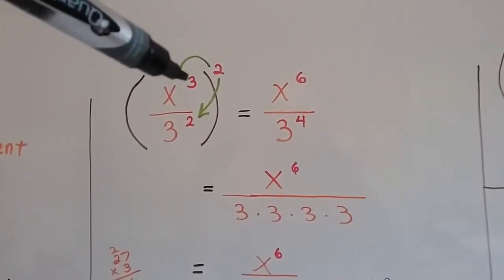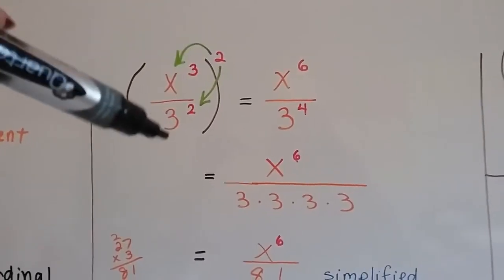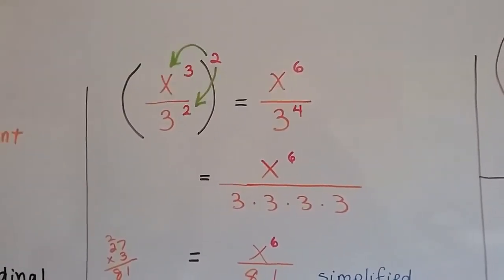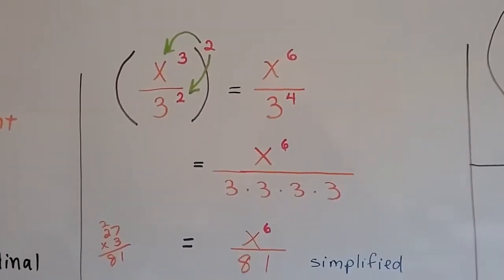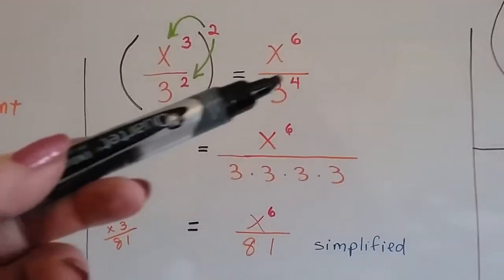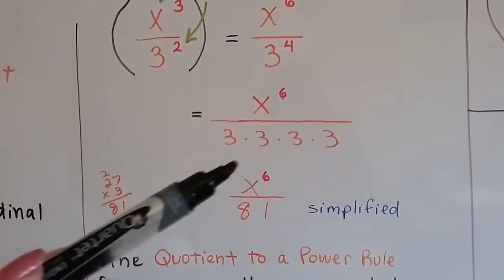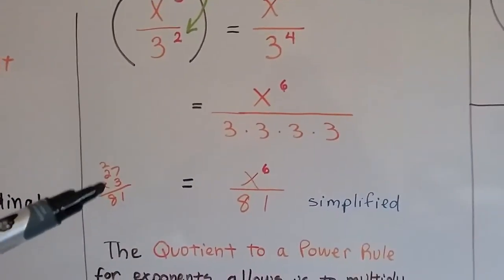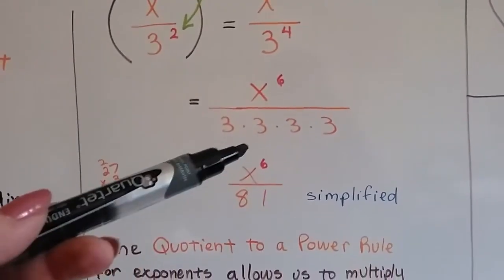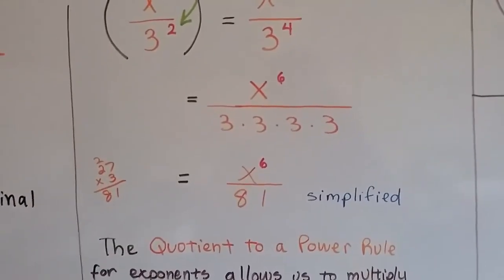We distribute this one to the x to the third and get x to the sixth. We distribute this one to 3 to the second and get 3 to the fourth. And we can't do anything with the x to the sixth because we don't know what its value is. But we can do the 3 to the fourth and simplify that. That's 3 times 3 times 3 times 3. 3 times 3 is 9, 9 times 3 is 27, and 27 times 3 is 81. So it's x to the sixth power divided by 81 when it's simplified.